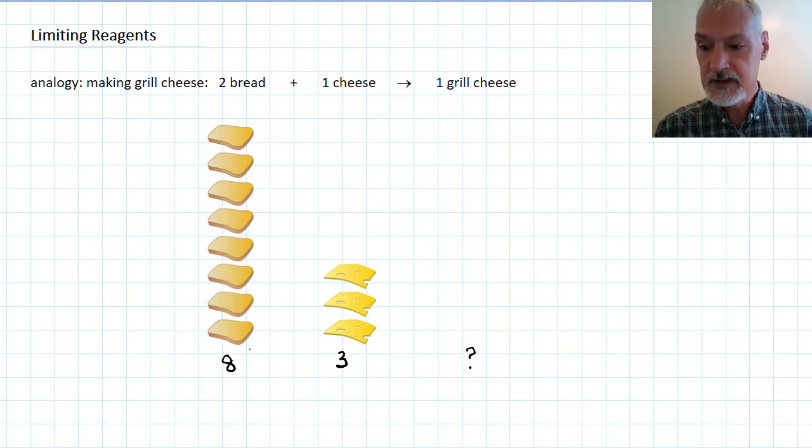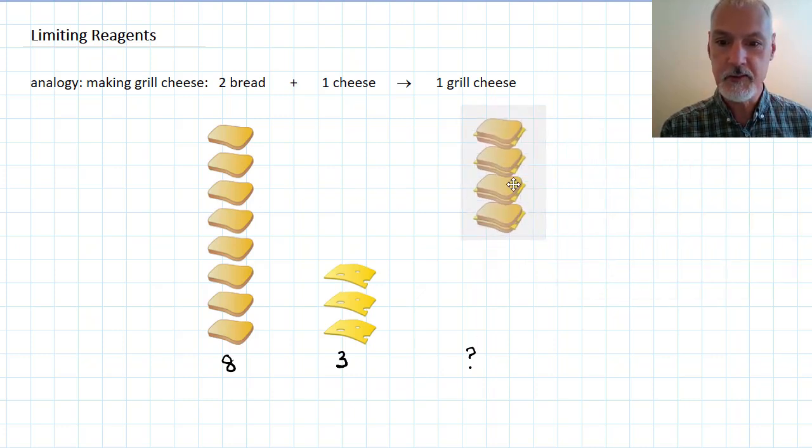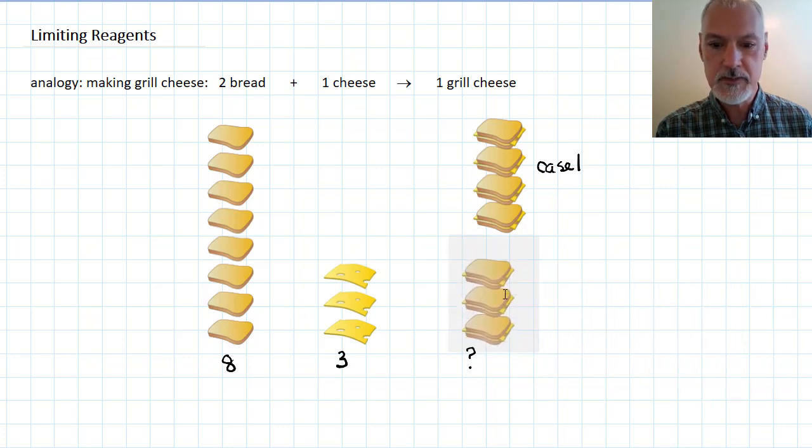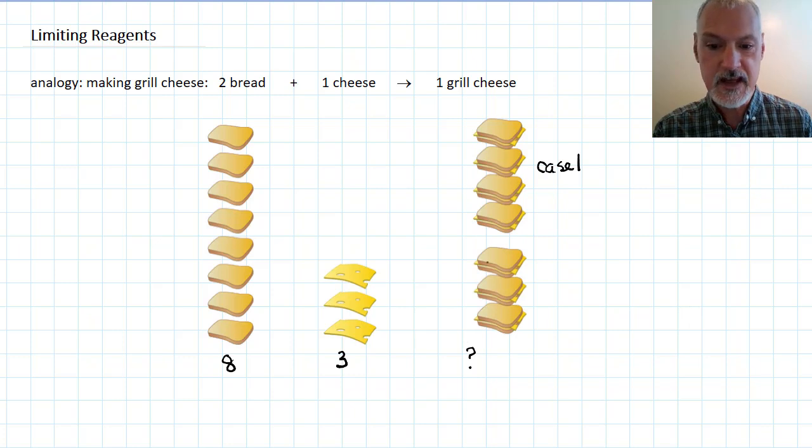One approach to this problem is to consider first just the bread by itself. With eight slices of bread, it should be possible to make four grilled cheese. That's case number one. In the second case we'll consider just the cheese. With three slices of cheese we should only be able to make three grilled cheese. That would be case number two.